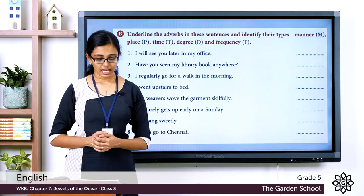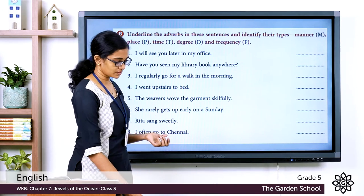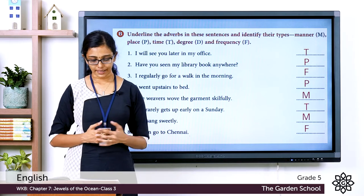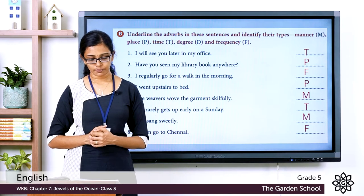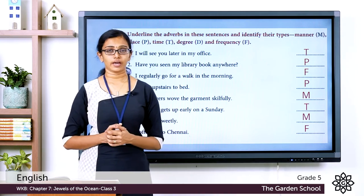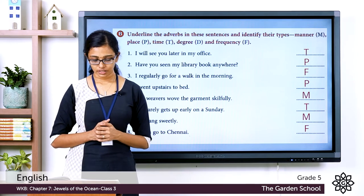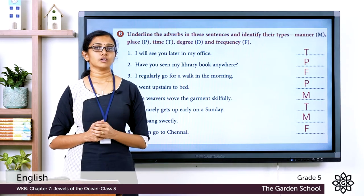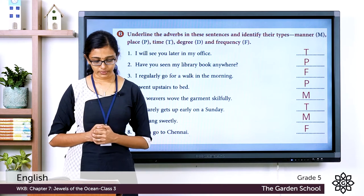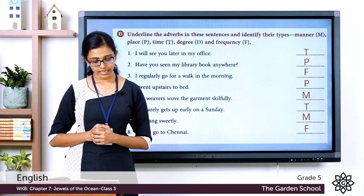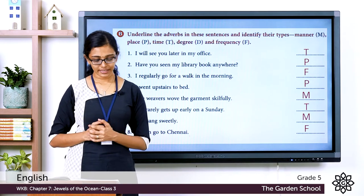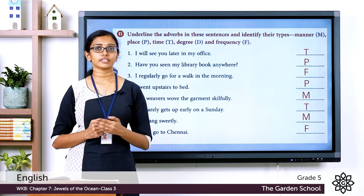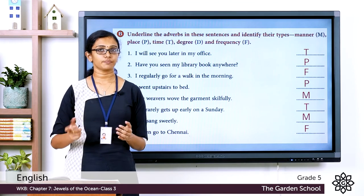Let's see the answers. First: 'I will see you later in my office' — the adverb 'later' is an adverb of time. Second: 'Have you seen my library book anywhere?' — 'anywhere' is an adverb of place. Third: 'I regularly go for a walk in the morning' — 'regularly' is an adverb of frequency, write F in the space provided. Fourth: 'I went upstairs to bed' — 'upstairs' shows place, so underline it and write P for place.